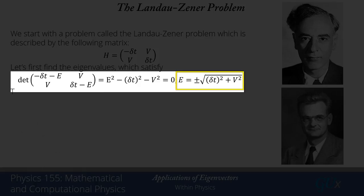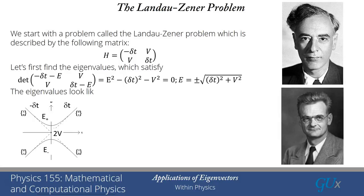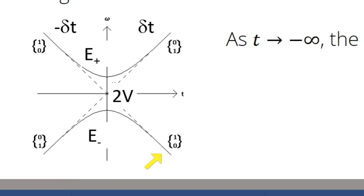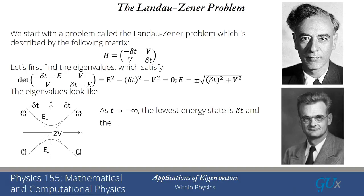So there are two energies, and they're separated from zero. If we look at those energies on a plot, they look like the figure shown here on the lower left. As time goes to minus infinity, the lowest energy state is the (0,1) state, whereas as time goes to plus infinity, the lowest energy state is the (1,0) state. So if I always stay in the ground state, I'm going to be making a transition from the (0,1) state to the (1,0) state as a function of time.